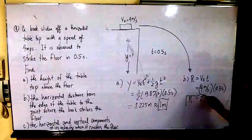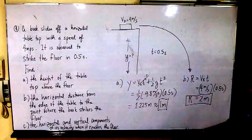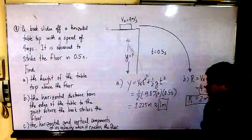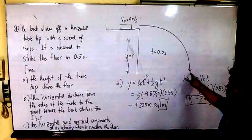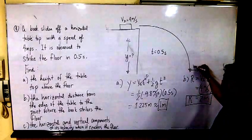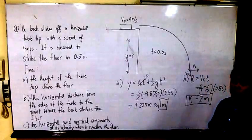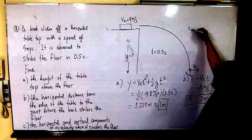Rounding this off, you will get 2 meters. In letter C, what is the horizontal and vertical components of its velocity once it reaches the floor? So V sub X remains the same, and V sub Y, we have to compute for that.